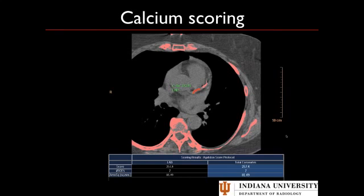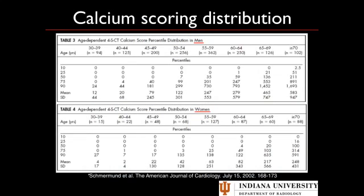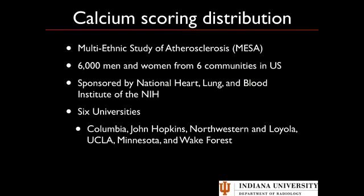As you keep adding and add different vessels, you get a total score. One important thing: when you do calcium scoring, you not only give just the raw score, but you actually do a population distribution. Depending on whether the patient is male or female and what age they are, the calcium score affects where they fit within the patient population. The scoring system we generally use is the Multi-Ethnic Study of Atherosclerosis, or the MESA Study.